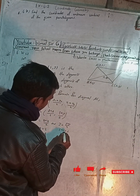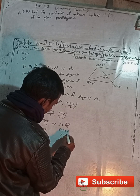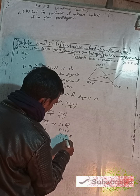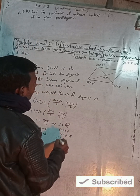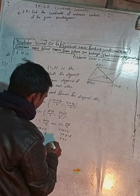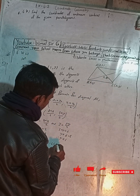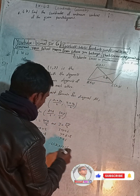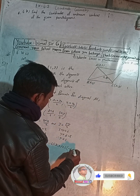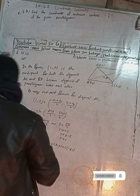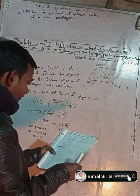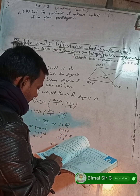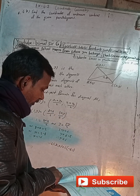So 5 plus y equals 6, which means y equals 6 minus 5, therefore y is equal to 1. Therefore, the coordinate of C is x comma y equals minus 6 comma 1. Let me check the answer — 6b gives C as minus 6 comma 1. This is correct.